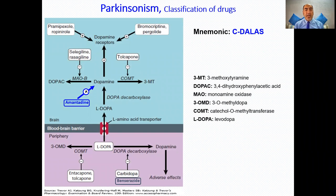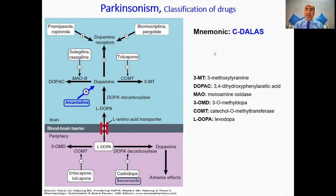This important slide collects all the classes of anti-Parkinsonian drugs. The mnemonic is C-DALLAS: C stands for COMT, catechol-O-methyltransferase; D stands for dopamine agonists such as bromocryptine and pramipexole; A stands for amantadine, which facilitates dopamine release; L stands for levodopa; A stands for anticholinergics such as benztropine; S stands for selegiline, which is an MAO-B inhibitor.